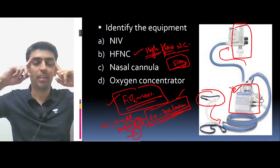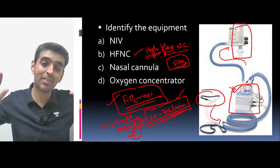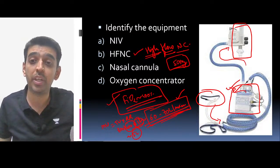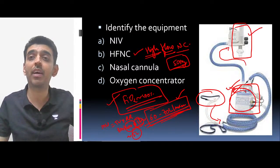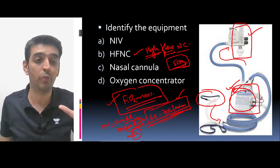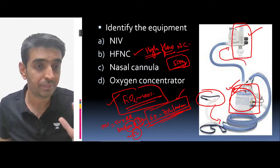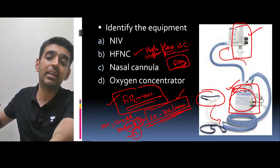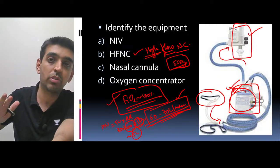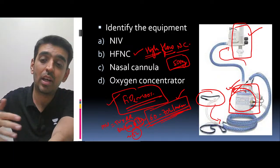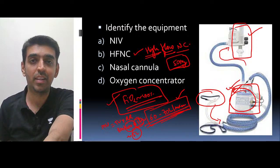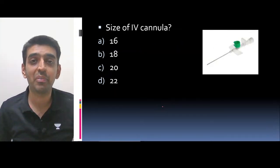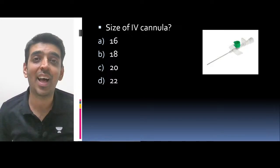That is why you require a humidifier with HFNC, and the flow meters need to be set accordingly. We can discuss this in greater depth when we cover COVID-based scenarios and lung ventilation. Next question on your screen: identify the size of this IV cannula. It is green color — whether it is 16 gauge, 18 gauge, 20 gauge, or 22 gauge.